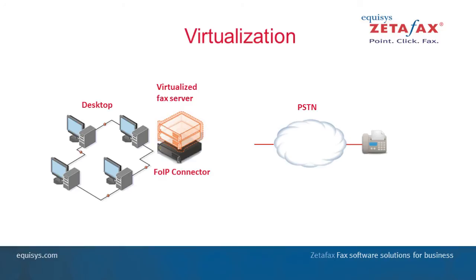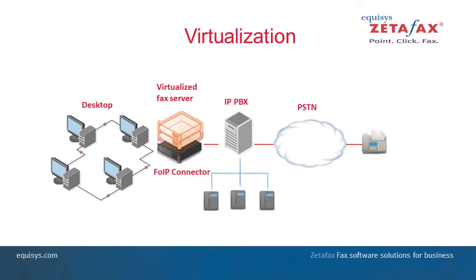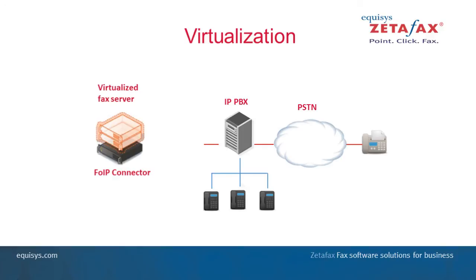A fax over IP connector license solves this issue by removing the need for a fax board and enabling faxes to be transmitted through the IP connection. There are three possible configuration options. In scenarios where the fax server is connected directly to telephone lines supplied by a telecom supplier, the fax over IP connector accesses the telephone lines via an IP gateway box — a node that allows communication between networks, providing a medium for the fax server to communicate with the PSTN. Alternatively, for businesses using a compatible IP phone system, the FOIP connector software can connect directly to an IP PBX telephone system, removing the need for additional hardware. Finally, for companies with a digital or analog telephone system rather than IP PBX, the IP gateway box can again be used.